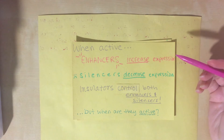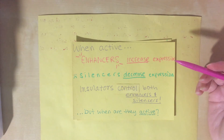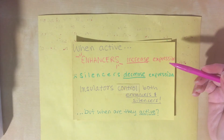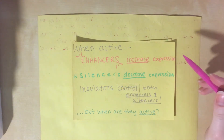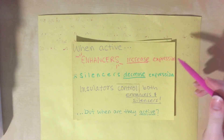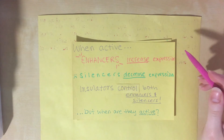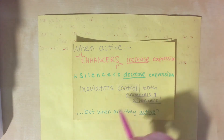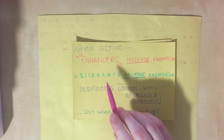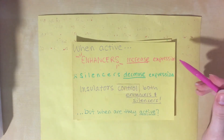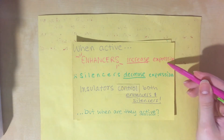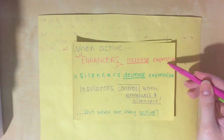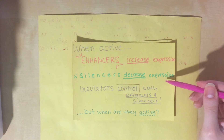Enhancers and silencers are long-distance regulatory elements that help control gene expression. When active, enhancers can activate the promoter region of a gene to increase the rate of transcription. Silencers do the opposite — when activated, they prevent RNA polymerase from transcribing a gene. So enhancers increase expression of genes while silencers decrease expression of genes.